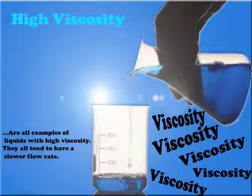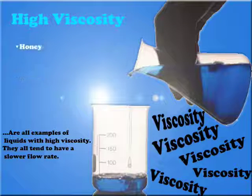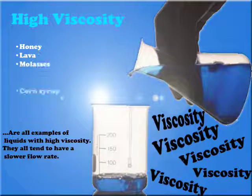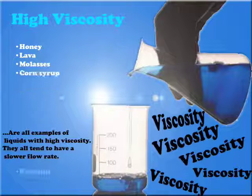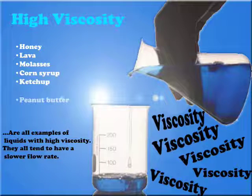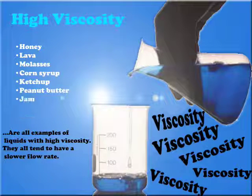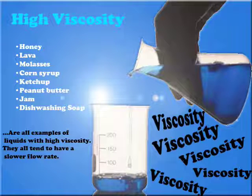High viscosity — stuff like honey, lava, molasses, corn syrup, ketchup, peanut butter, and jam are all examples of liquids that have a high viscosity. They all tend to have a slower flow rate.